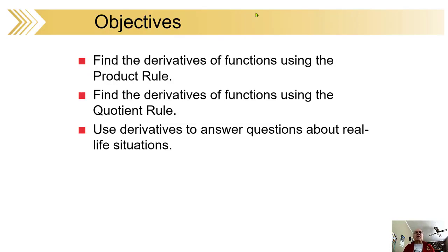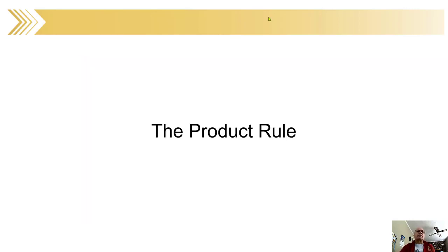So here are some of the things you're going to do. You're going to use the product rule after this, you're going to use the quotient rule, and of course, as always, answer questions about real life situations. Ready or not? I warned you, here we go. We've got two rules to pick up, and then we'll have some examples. Those two rules are not too difficult. The first one is the easiest — that's why it comes first — the product rule.